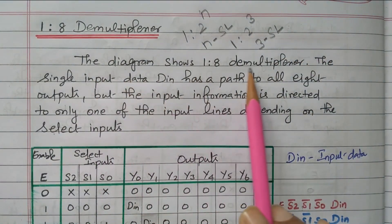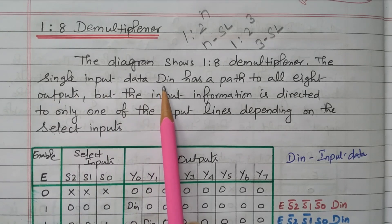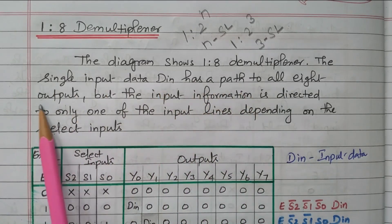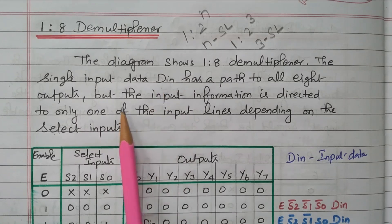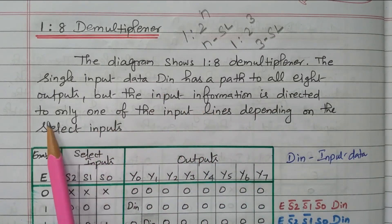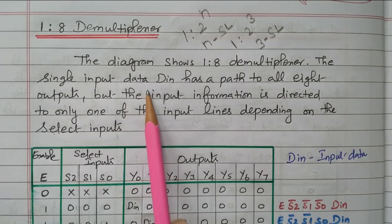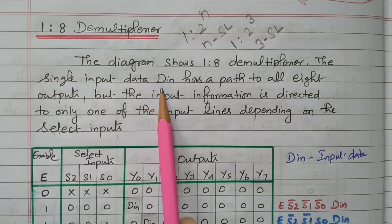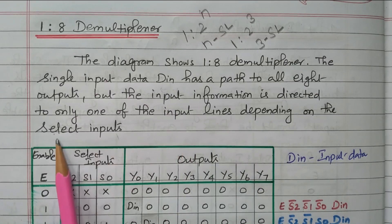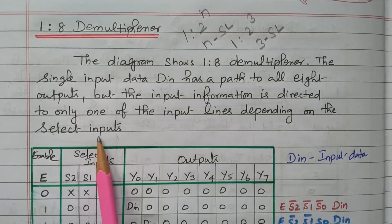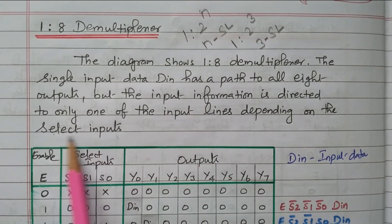The diagram shows the 1-to-8 demultiplexer, which we will see later. The single input data is D_in. D_in is connected as a path to all 8 outputs, but the input information is directed to only one output depending on the select input. Out of 8, only 1 position will have the input data available; whether it is the first or second position is decided by the selection line.